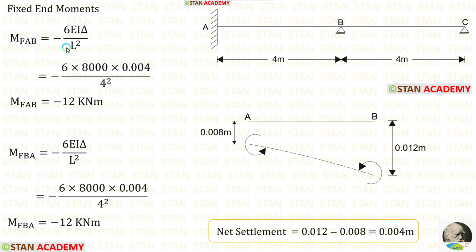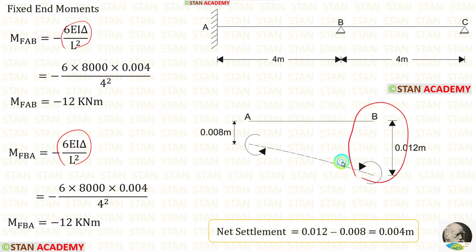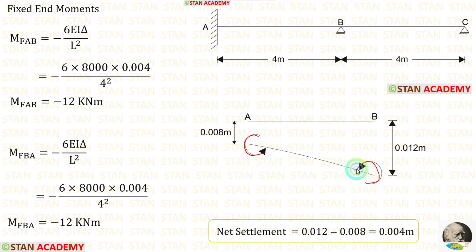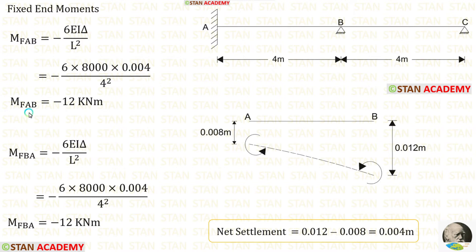The formula for fixed end moment due to settlement is 6EI·δ/L². Since the net settlement occurs on the right side, the fixed end moments due to settlement will be negative — they act in the anti-clockwise direction. Applying the values: L = 4, EI = 8000, δ = 0.004. After calculation, we get M_AB and M_BA.